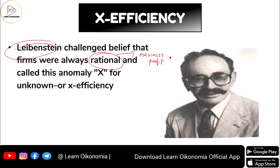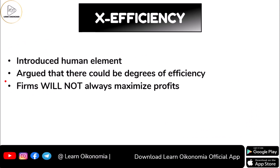The anomaly 'x' is considered as something unknown. What Leibenstein did was introduce a human element into the context. He argued that there could be some degree of efficiency, but there will also be something called inefficiency, because we are dealing with imperfections.